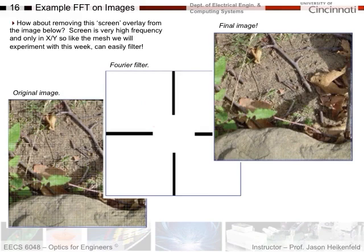You could take a photograph through a mesh, apply Fourier transforms, say 'remove mesh,' and it'll clean the image up and give you the image without the mesh in the way. You can see how powerful this is from a mathematical standpoint, and if you can do this optically, you can do it at the speed of light.